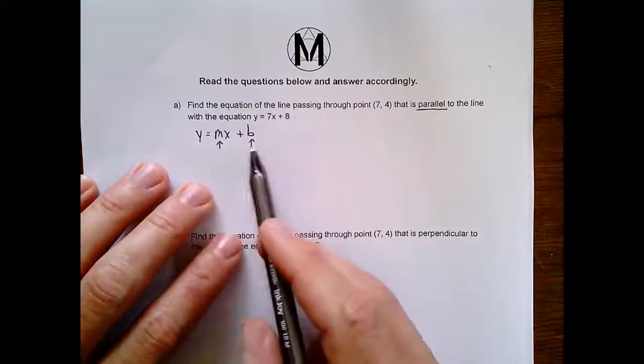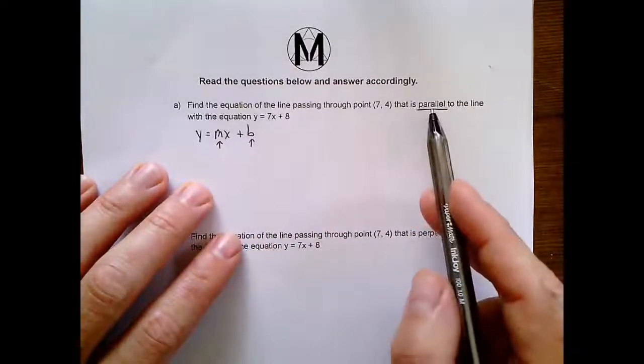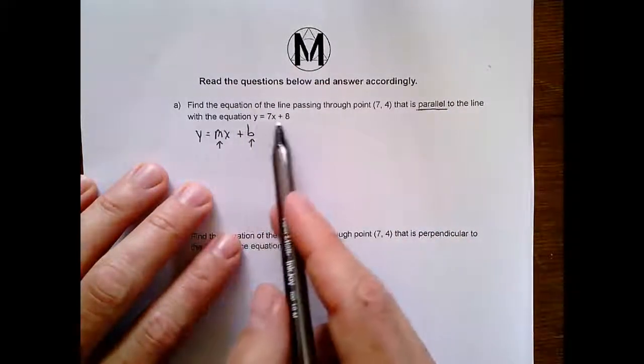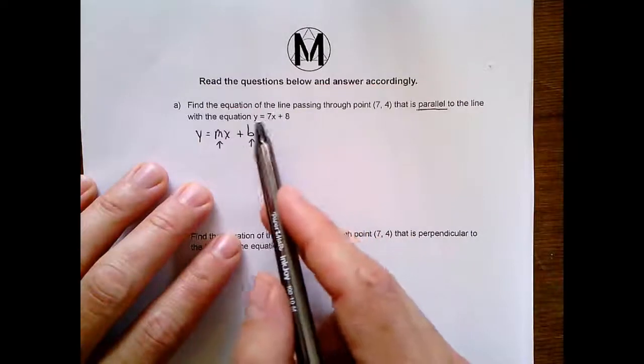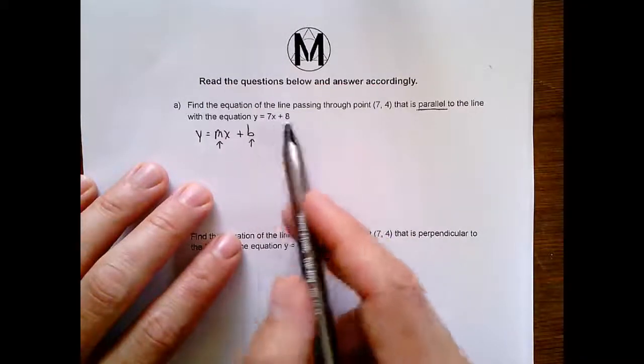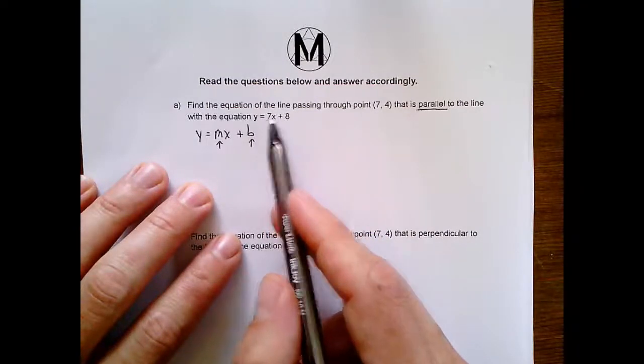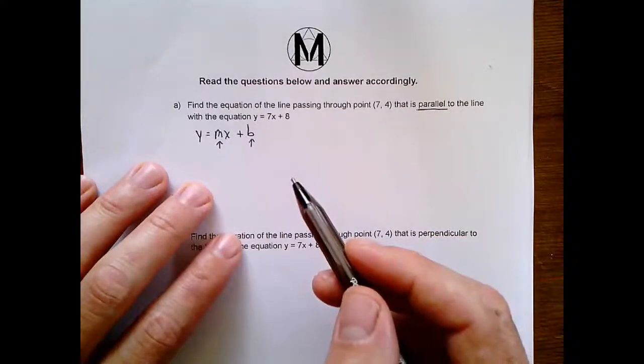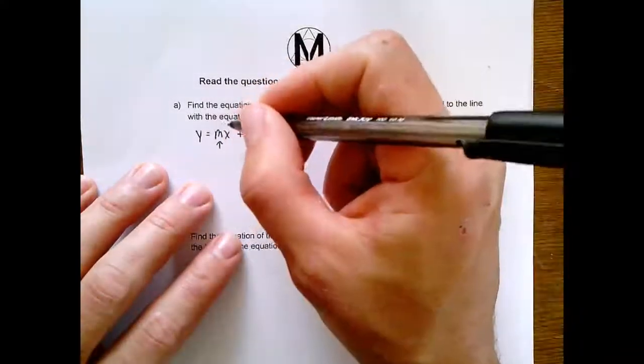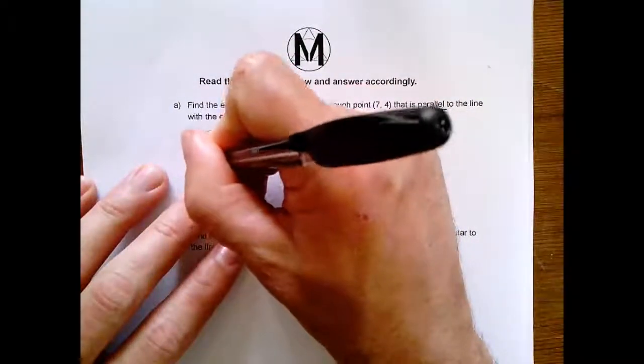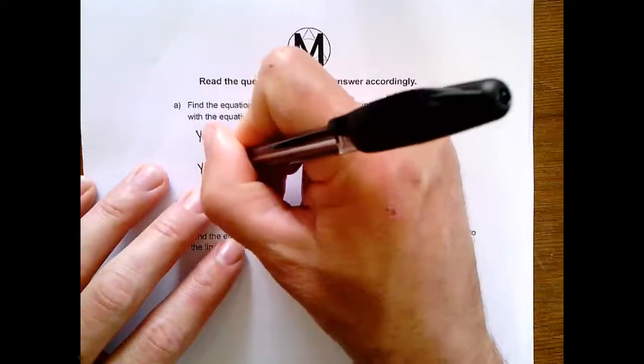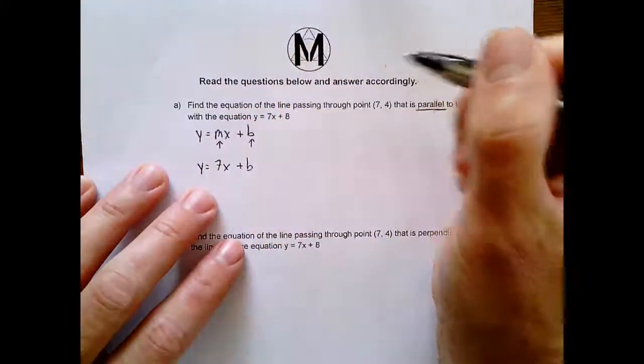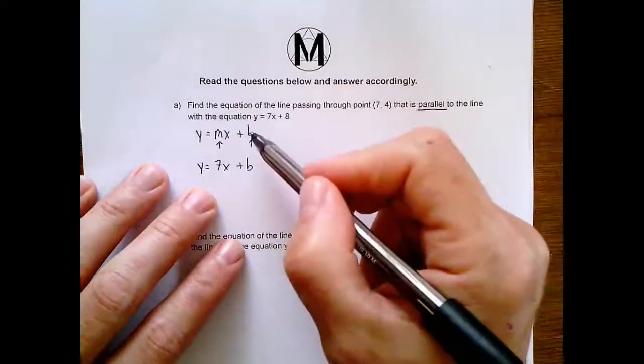So we're in luck because they said it's parallel. Well, we already know the slope. The slope would be the same as this line. And so this is y equals 7x plus 8. This line's slope is 7, and because our lines are parallel, our line will have a slope of 7. So if you fill this in right now, now I know that whatever my answer is going to be, it's going to be y equals 7x plus b. Okay, so now we've got to find this b.